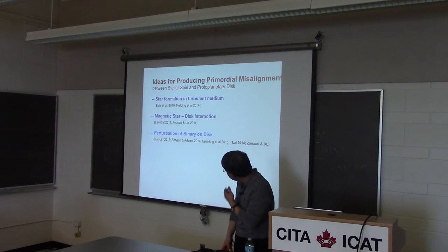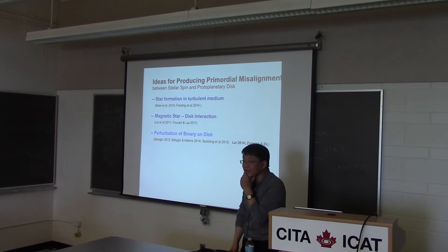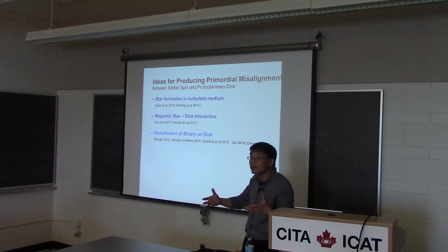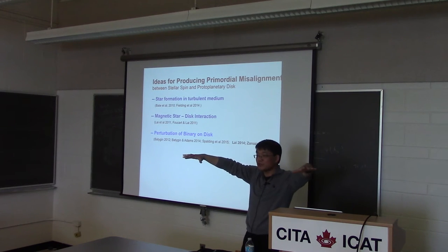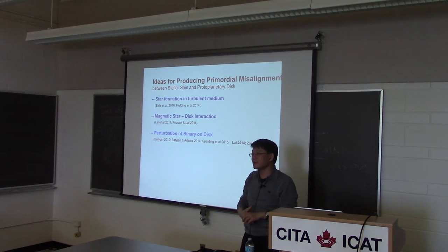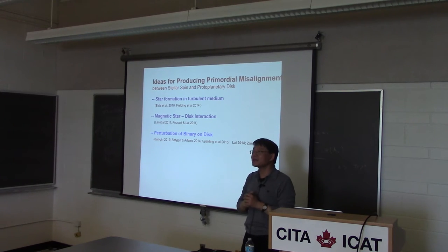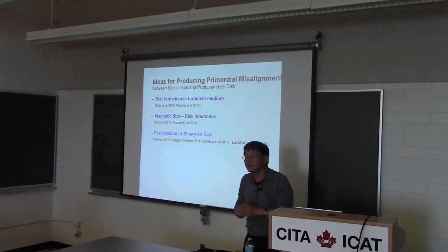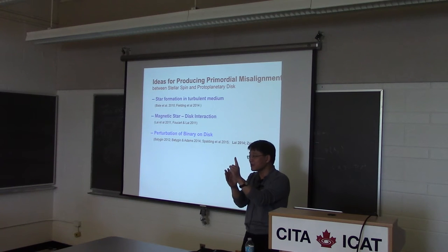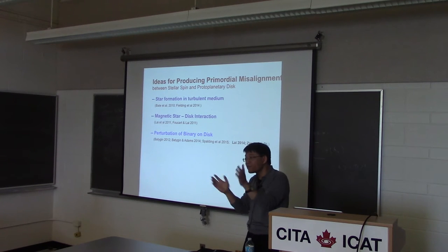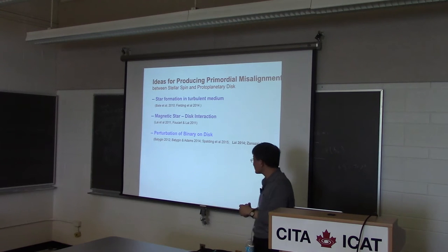The second possibility is that when you have a magnetic protostar — and we know kilogauss fields are typical — when you have a disk impinging upon the magnetic star, there is a mutual magnetic torque between the central star and the disk. Under some conditions, this torque tends to push the spin axis of the star and the disk away from each other.